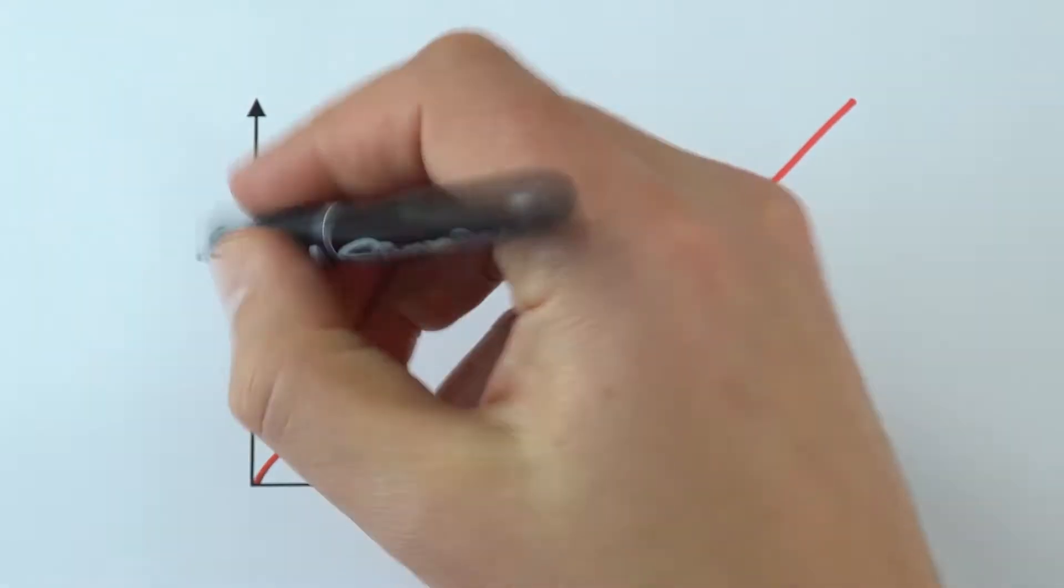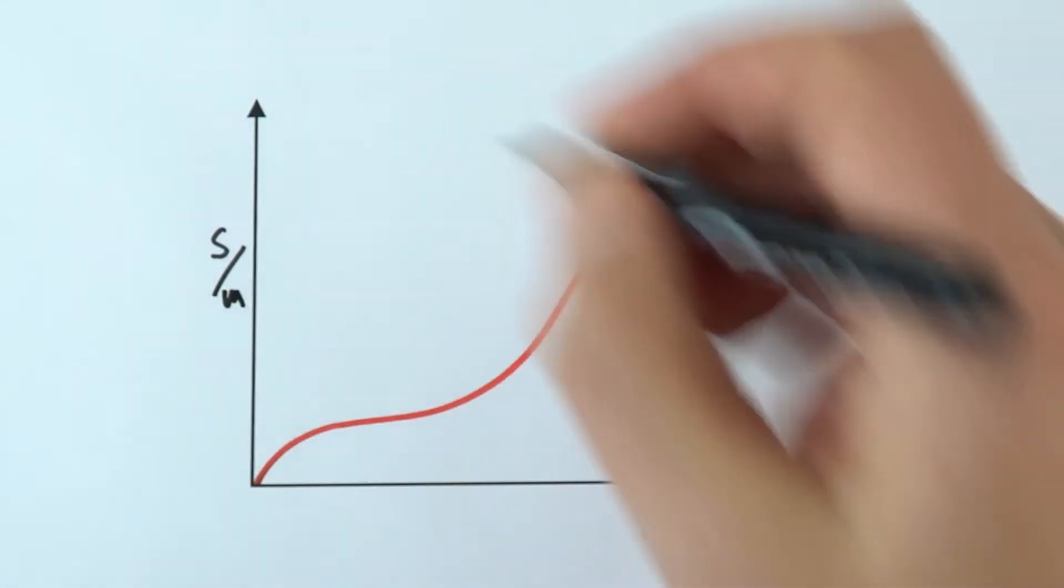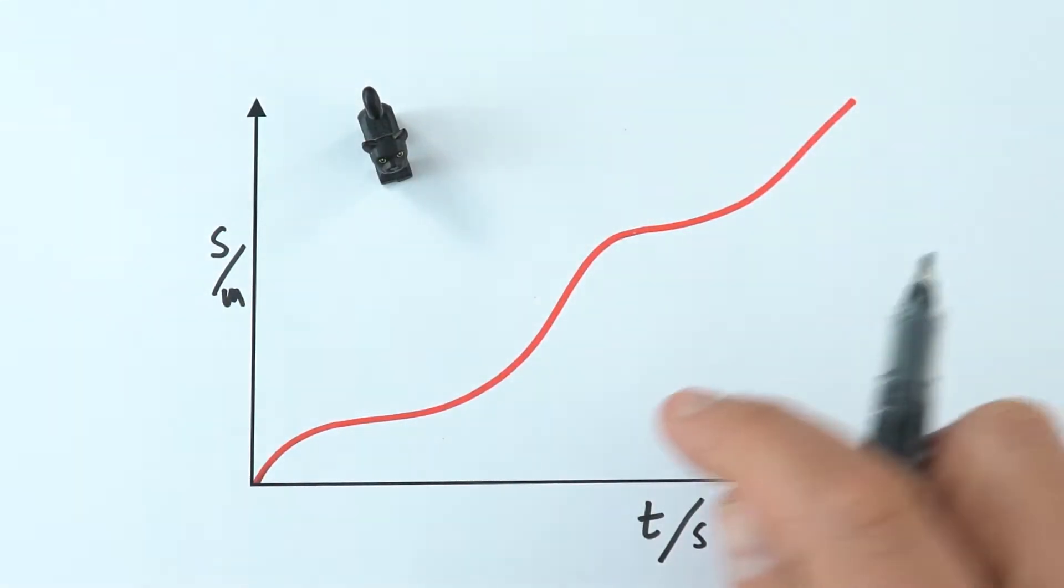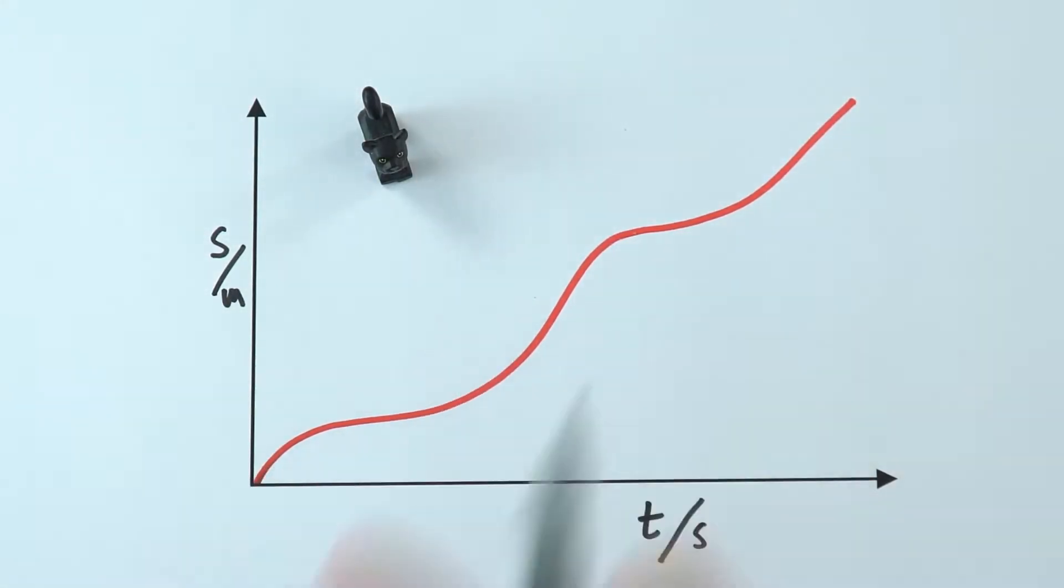And if we were to look at a distance-time graph, we've got our distance measured in meters and our time measured in seconds. If we were to maybe plot real data, we might get a line like this that has lots of curves on it.